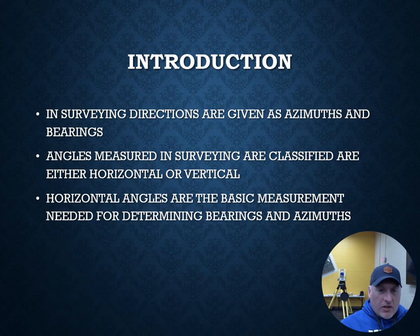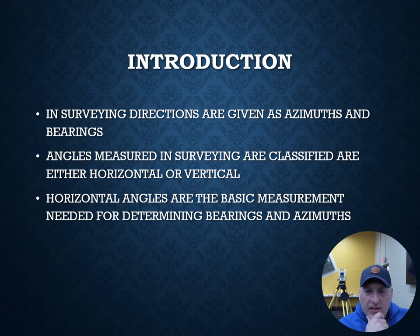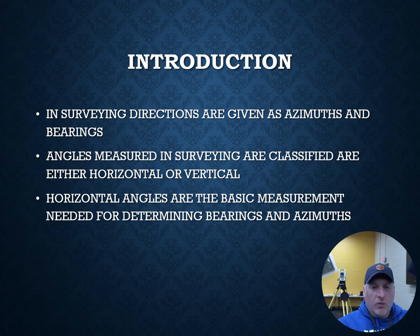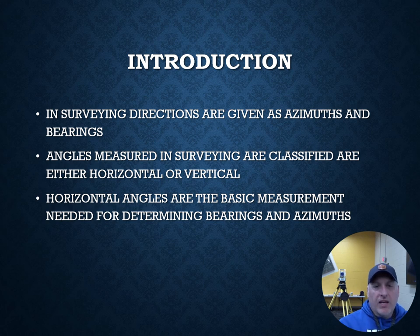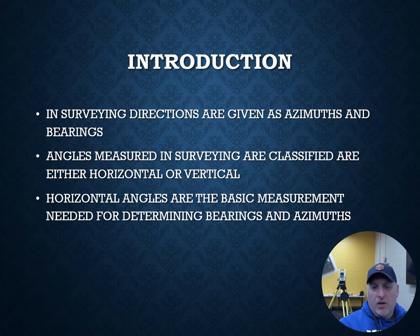So we'll do a little introduction. In surveying, directions are typically given as azimuths or bearings, and those bearings are either south azimuths, north azimuths, or bearings. Angles are measured in surveying and classified as horizontal or vertical. For the purposes of this video, we're not going to talk about vertical angles, but we will talk about horizontal angles. If we get into geodetic-type practices, we would use a vertical angle to determine position or direction on Earth, but for these purposes we're just going to worry about the horizontal angle.